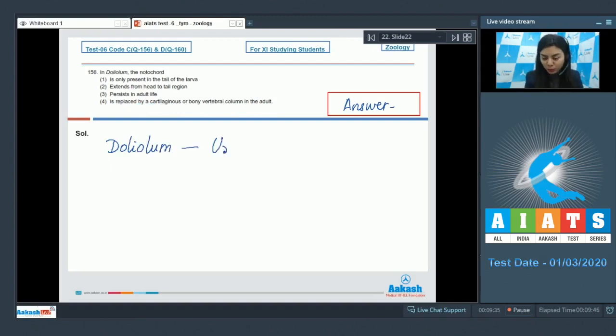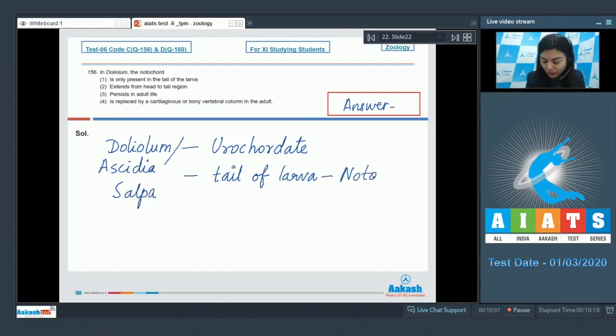The doliolum is a urochordate, and urochordates show the presence of notochord only in the tail of larva, hence they are called urochordates. Other examples of urochordates are ascidia, salpa, etc. The notochord which is present only in the tail does not persist in adulthood of the organism. It disappears in adults.